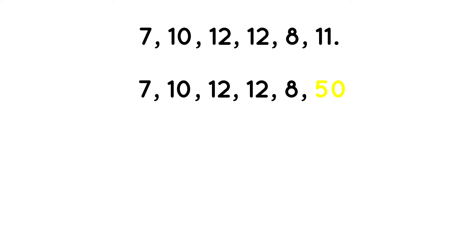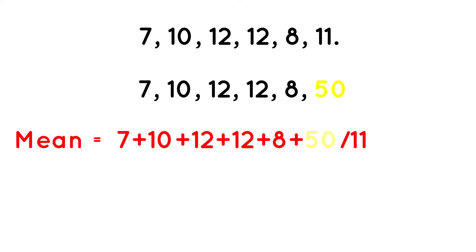Let's replace the value of 11 with the number 50. So our new dataset becomes: 7, 10, 12, 12, 8, and 50. If we take the average: 7 plus 10 plus 12 plus 12 plus 8 plus 50 gives us 99. Then 99 divided by 6 gives us 16.5. We can see that when we changed the value from 11 to 50, the mean changed from 10 to 16.5. This implies that the mean is very sensitive to outliers — a large or small extreme value can significantly affect the mean.